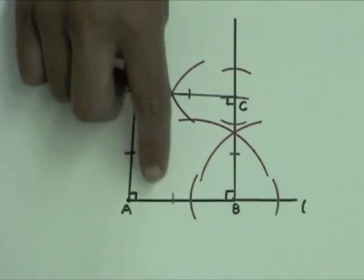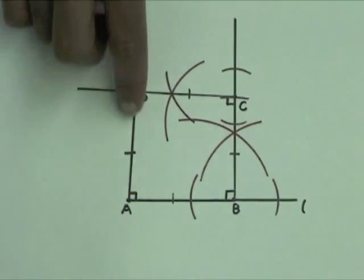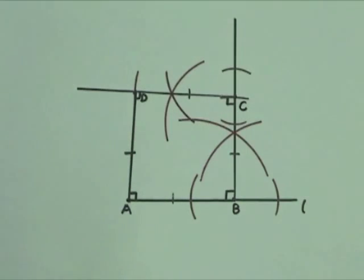A, B, C, D has four equal sides and four right angles, so A, B, C, D is a square.